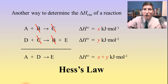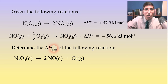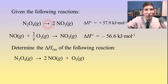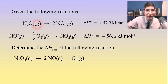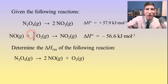This is kind of like working a puzzle. We're given two reactions, and our job is to use that data to determine the delta H of a third different reaction: N₂O₄ yields 2NO plus O₂. Now you might notice that the way these are written, they don't add up — nothing cancels out. So what I'm going to have to do is manipulate those top two equations so that they do add up.